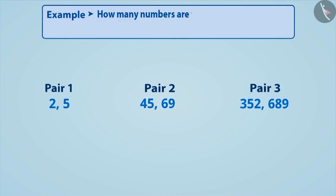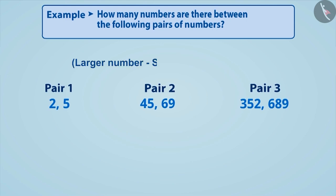Next example: how many numbers are there between the following pairs of numbers? To know how many numbers are there between any two whole numbers, first, we have to subtract the smaller number from the larger number and then subtract 1 from the result.